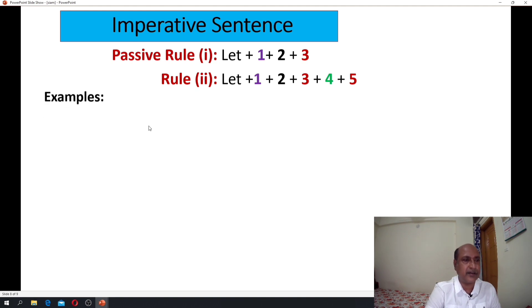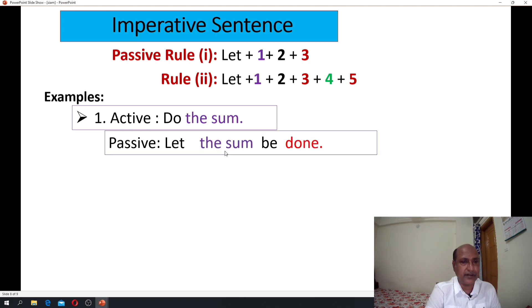Let's see the example here. Number one: do the sum. It is the principle verb do. Passive: let the sum be done. Rule: let plus one, two, three.